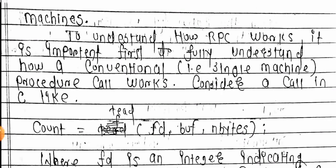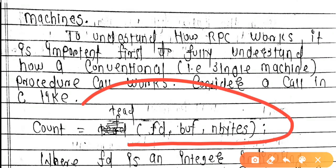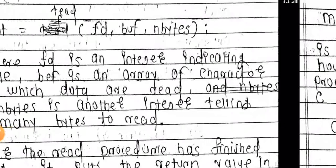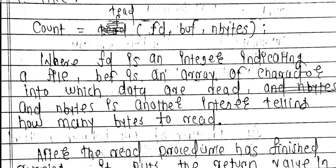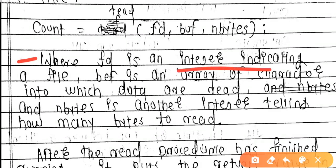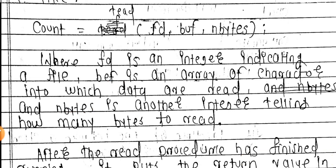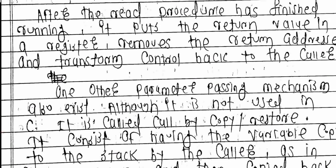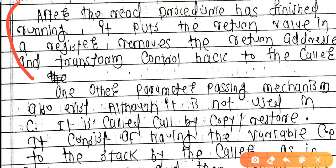In a basic RPC operation, the parameters include: BFD — an integer indicating a file ID number; BF — an array of characters into which data are read; and N bytes — another integer telling how many bytes to read. These are the key parameters used in the RPC read procedure call.